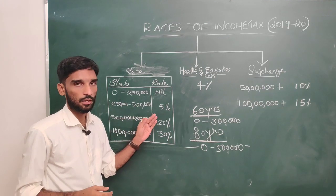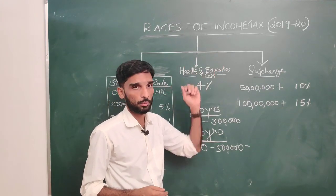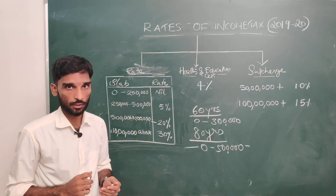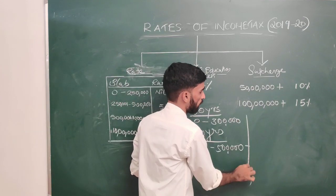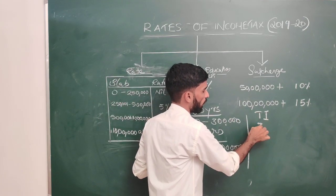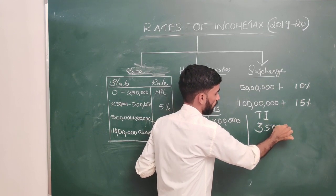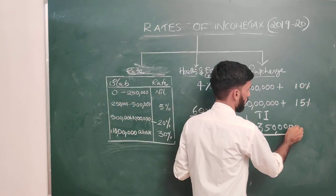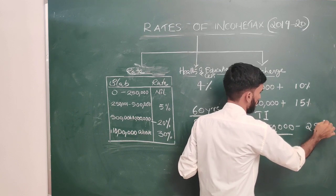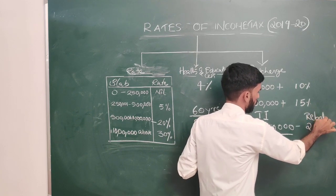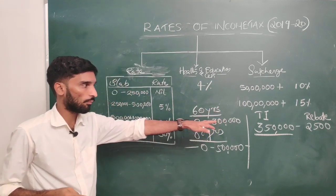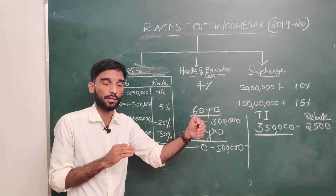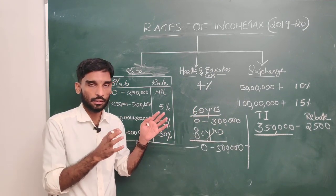For 60 years and above and 80 years and above, the tax rate includes a rebate. You add a rebate when total income is 3 lakhs to 5 lakhs — the amount is 25,500 rupees rebate. If income is above that, no rebate.